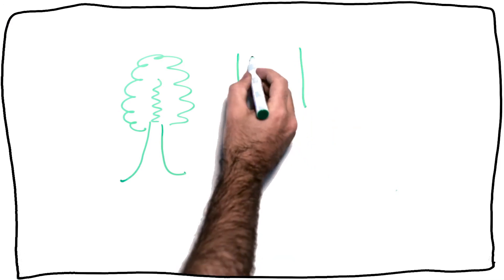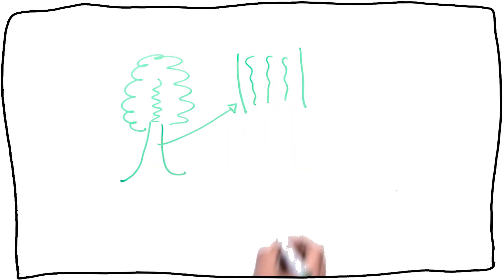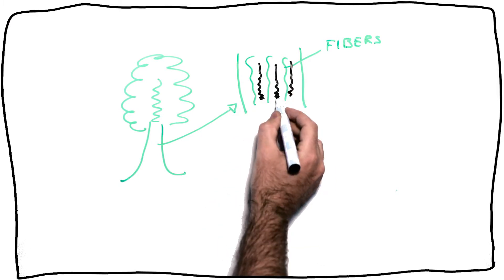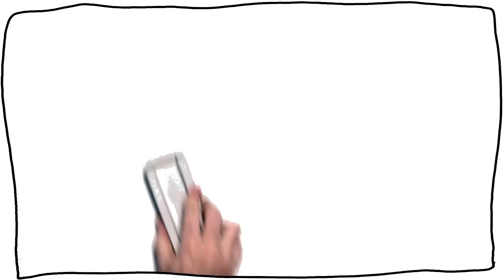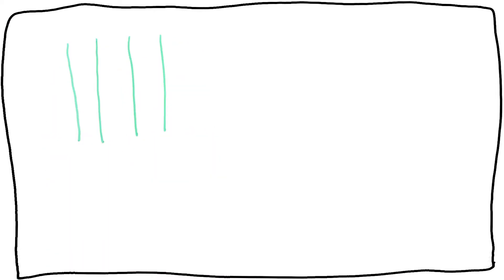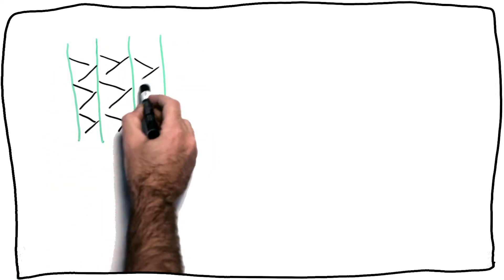In lignocellulosic plant cell walls, lignin fills the spaces between the sugar skeleton, mainly cellulose fibers, like a resin that acts as the essential glue to ensure the structural integrity, strength and rigidity of the plant.